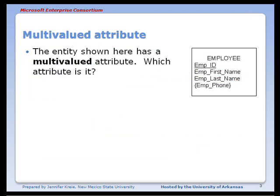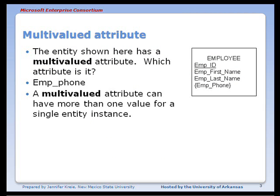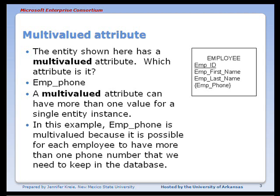The employee entity shown here has a multi-valued attribute. Which one is it? ImpPhone. A multi-valued attribute can have more than one value for a single entity instance. In our example here, that means that each employee could have more than one phone number that we need to keep track of in the database.